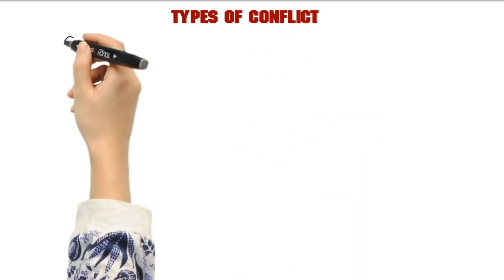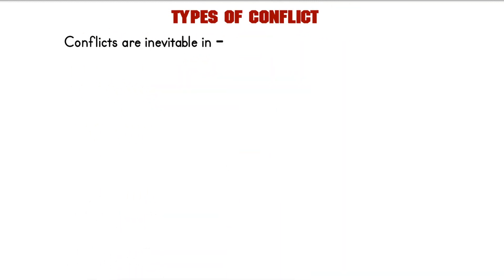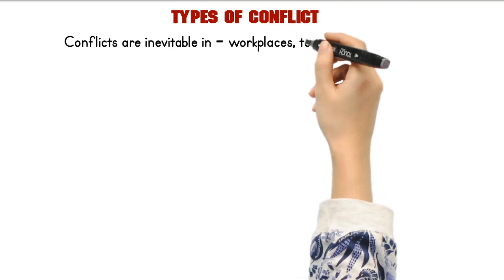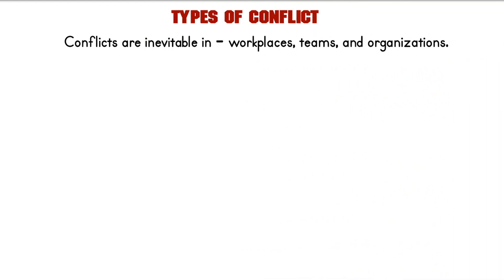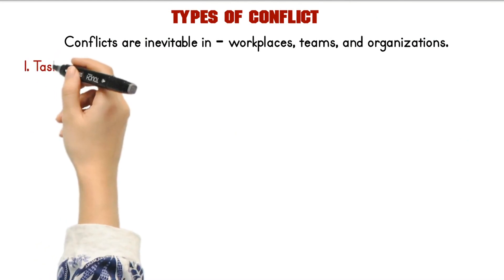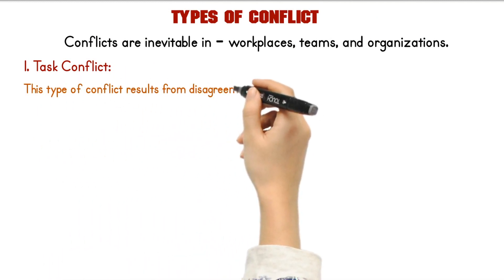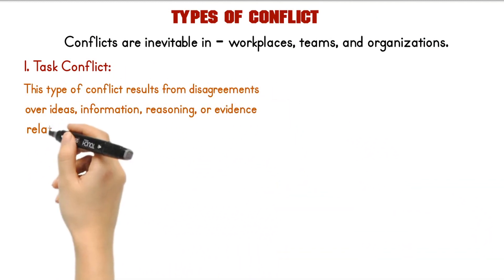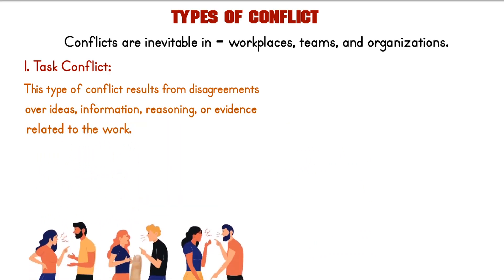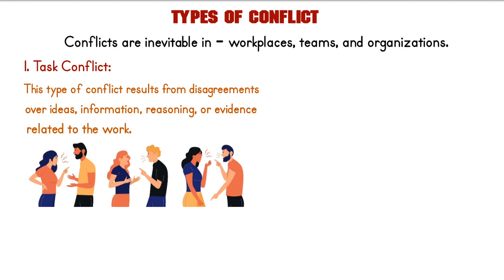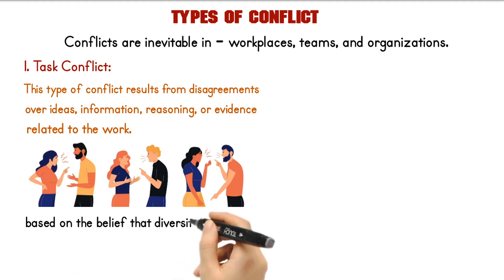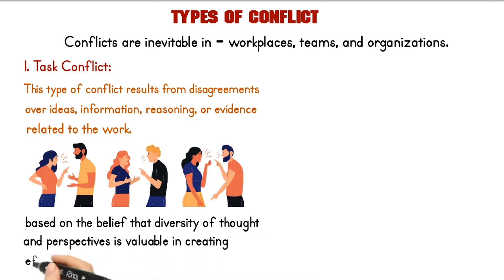Types of conflict. Conflicts are inevitable in any setting where people work together, including in workplaces, teams, and organizations. Understanding the different types of conflict can help in addressing them effectively. Task conflict results from disagreements over ideas, information, reasoning, or evidence related to the work. It is often work-related and can be procedural, meaning it is about how work is to be done. Task conflict is based on the belief that diversity of thought and perspectives is valuable in creating effective decisions.